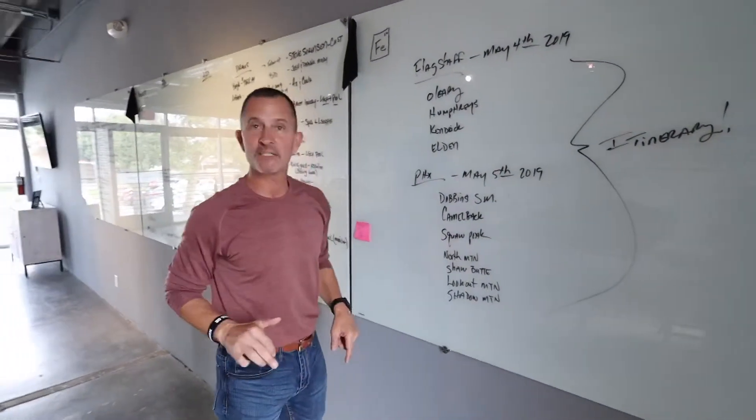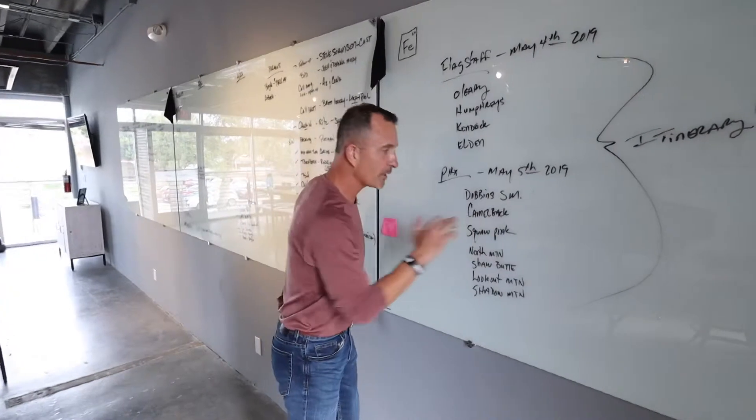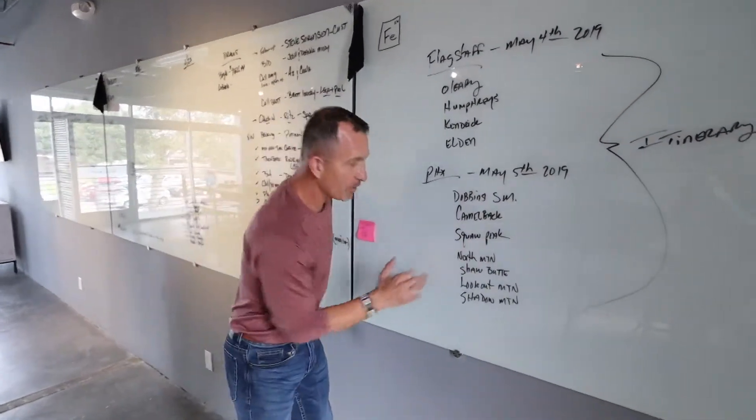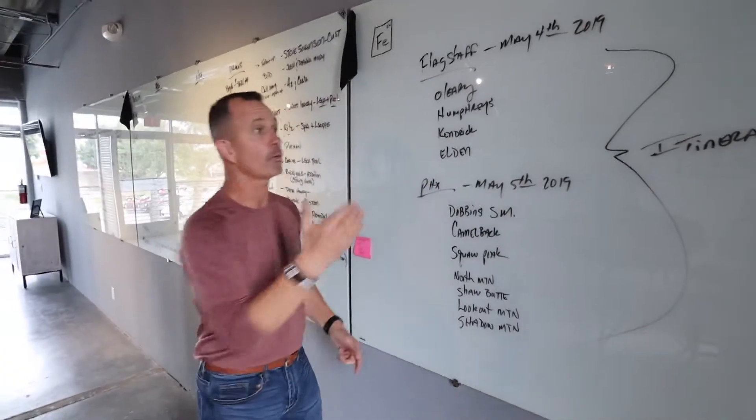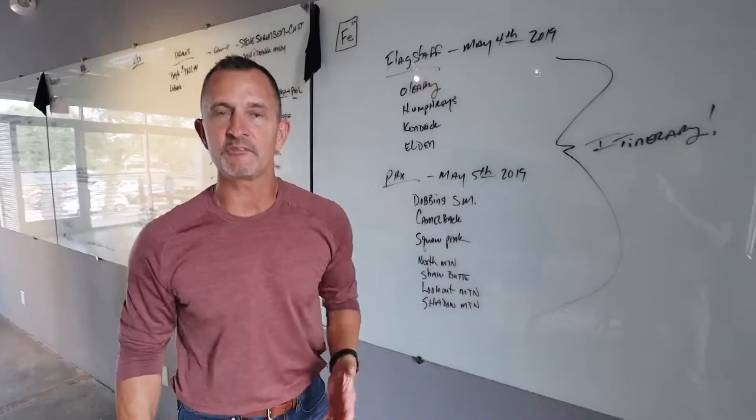We're gonna start at Dobbins South Mountain, then we're gonna go to Camelback, then we're gonna go to Squaw Peak, then we're gonna go to North Mountain, Shaw Butte, Lookout Mountain and Shadow Mountain. Total, roughly 50 miles, 20,000 feet.